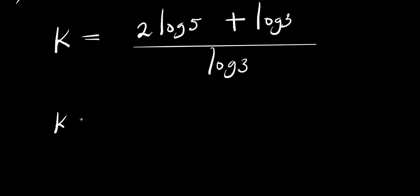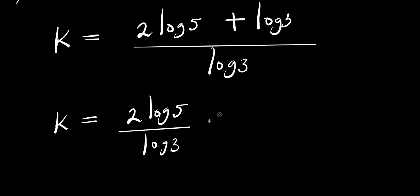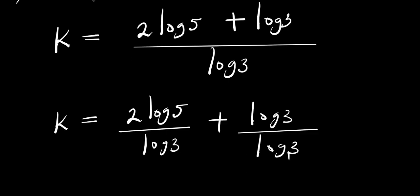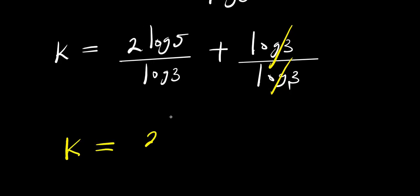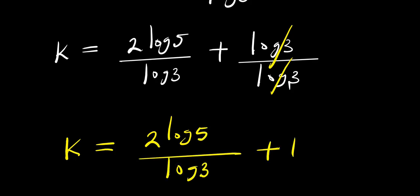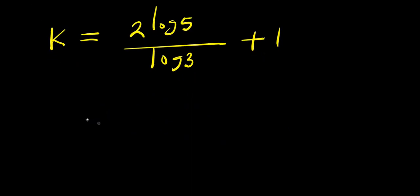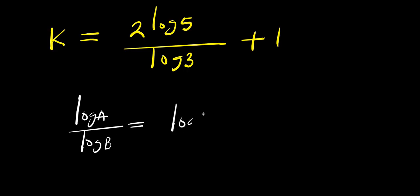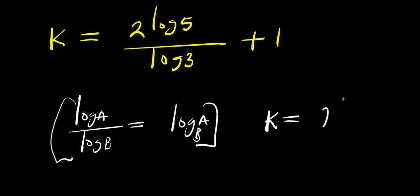From here, k equals 2 times log 5 divided by log 3, plus log 3 divided by log 3. Since log 3 over log 3 equals 1, this simplifies to k equals 2 times log 5 over log 3 plus 1. This is our answer.